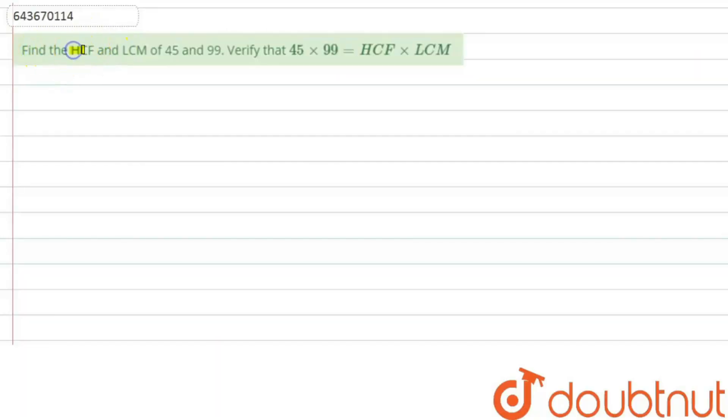Find the HCF and LCM of 45 and 99. Verify that 45 into 99 equals HCF into LCM. So first of all, we will find HCF and LCM of these two numbers, which are 45 and 99.